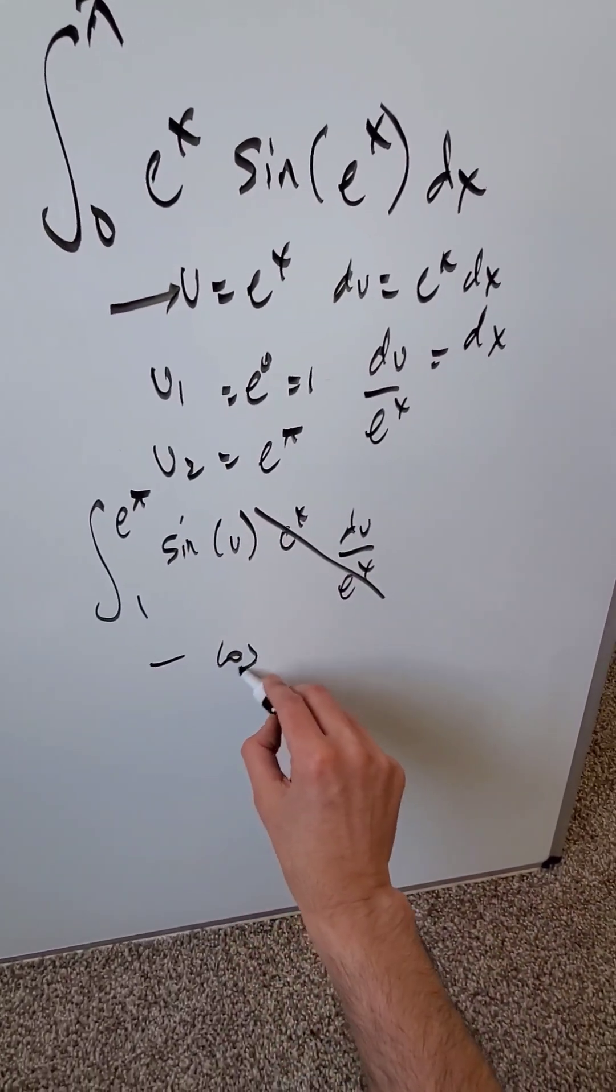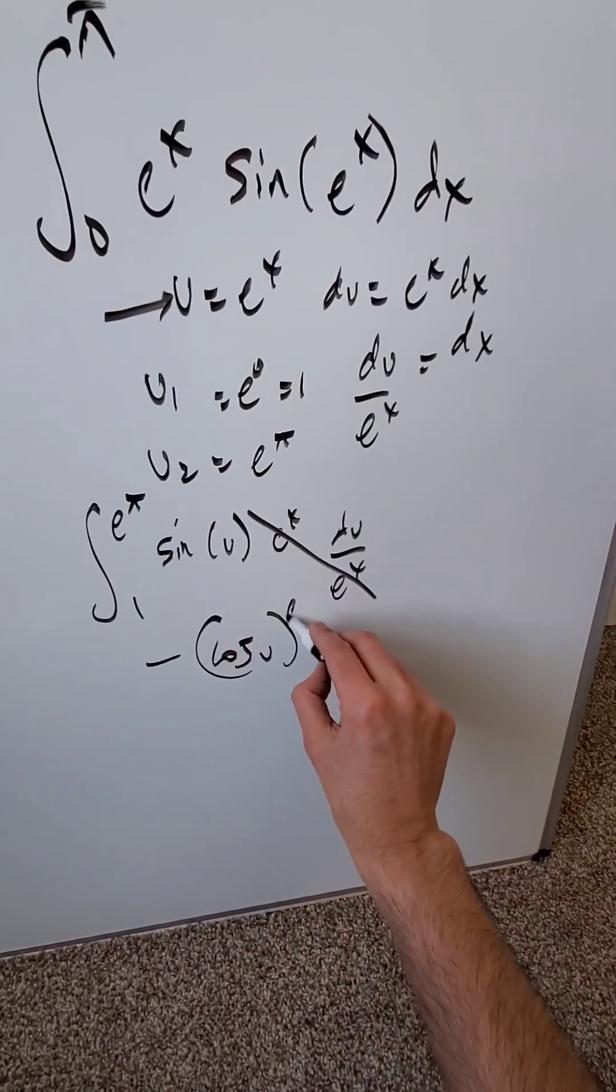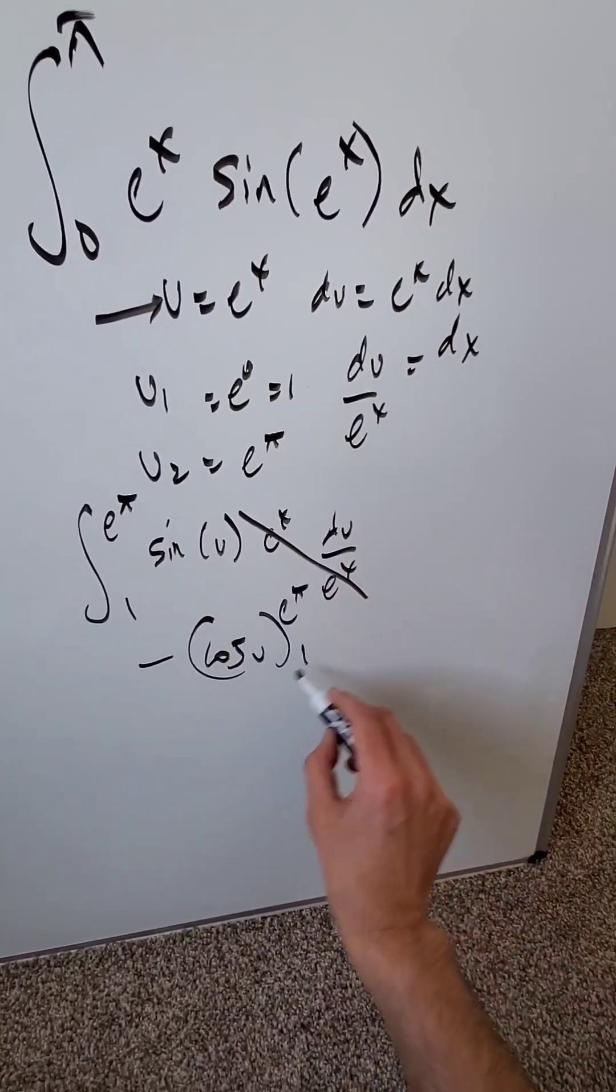The antiderivative from here is negative cosine u. I'm evaluating at upper limit e to the pi and lower limit 1.